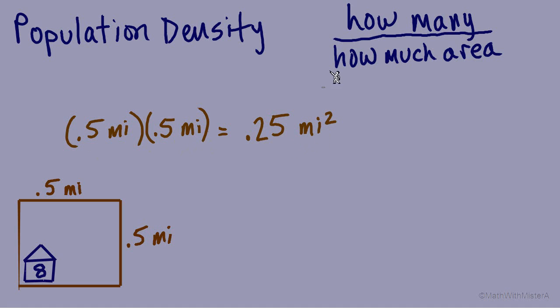And we can find the population density now doing this fraction. How many people compared to this area of 0.25 square miles? 8 people per quarter square mile. Now we have population density, this fraction, and it is a rate because a rate is a comparison of two separate units. In this case, it's people per square mile.